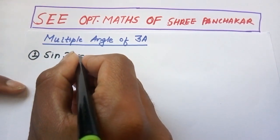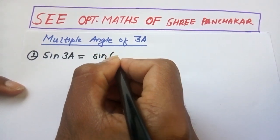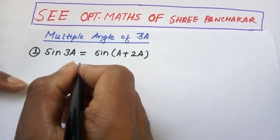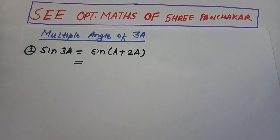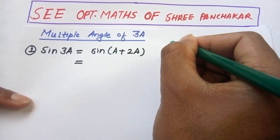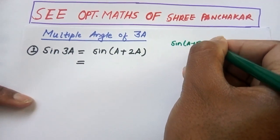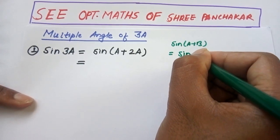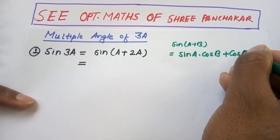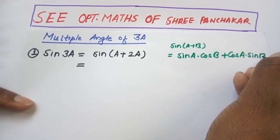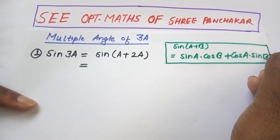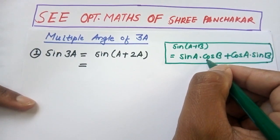In sine 3a, we can write it as sine of a plus 2a. We have a formula in compound angle: sine(a+b) equals sine a dot cos b plus cos a dot sine b. I'm going to show you the formula. In compound angle, sine(a+b) = sine a dot cos b plus cos a dot sine b.